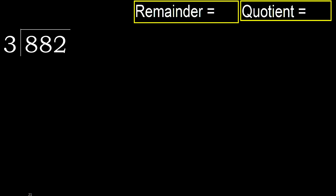882 divided by 3. 8 is not less, therefore start with 8. 3 multiplied by which number is nearest to 8, but not greater?